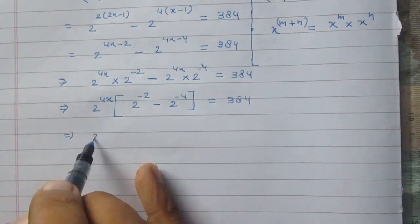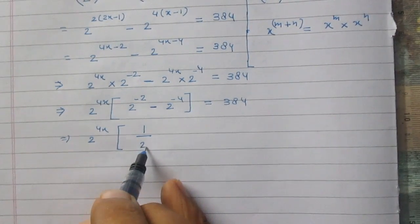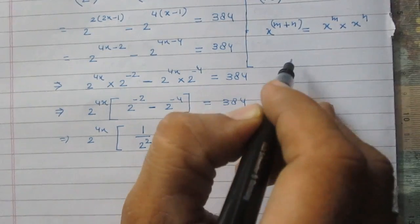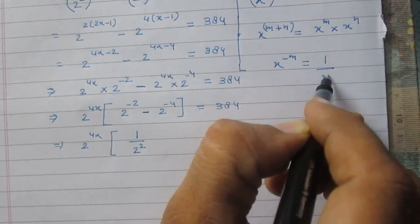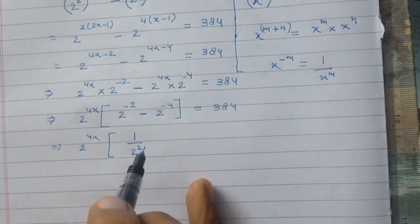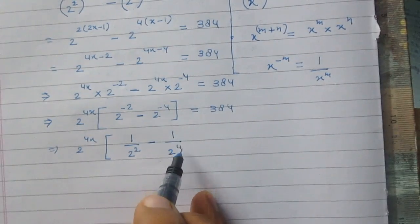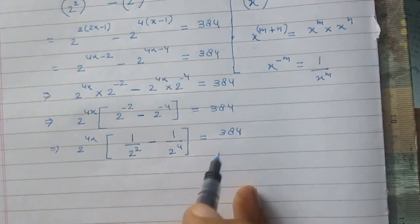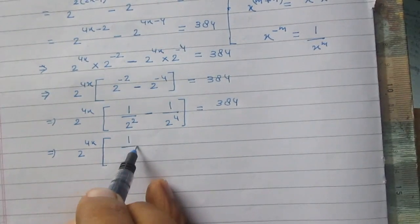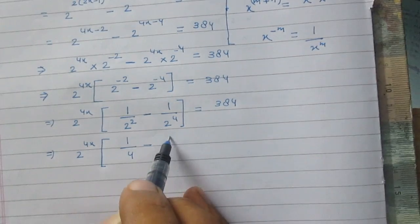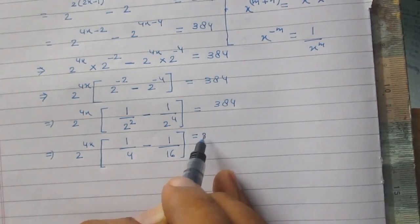So 2 raised to the power 4x as it is. Now 2 raised to the power minus 2 is 1 upon 2 raised to the power 2, because x raised to the power minus m equals 1 upon x raised to the power m. Similarly, 2 raised to the power minus 4 is 1 divided by 2 raised to the power 4. So we have 2 raised to the power 4x times (1 upon 4 minus 1 upon 16) equal to 384.